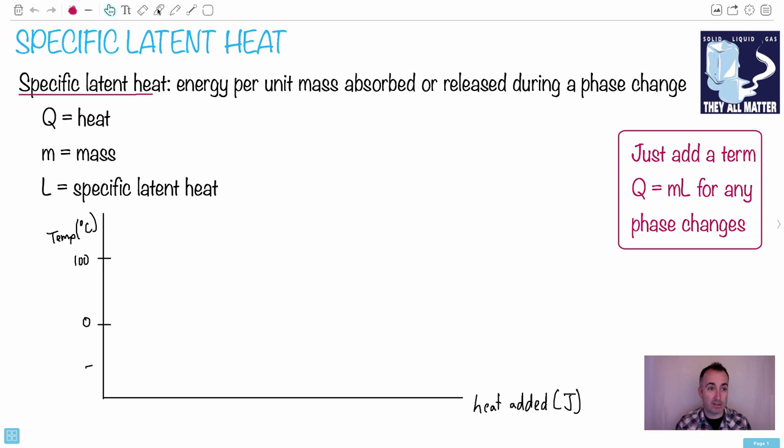We have an equation for it that's really important: Q equals ML. Just like for specific heat capacity we had Q equals MC delta T, here we have Q equals ML, where Q is the heat, the energy measured in joules, and M is the mass measured in kilograms.